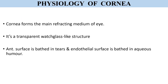Next is the cornea, which helps maintain a clear refractive medium of the eye. The cornea forms the main refracting medium of the eye. It is a transparent watch-glass-like structure whose anterior surface is bathed in tears, and the endothelial surface is bathed in aqueous humor.